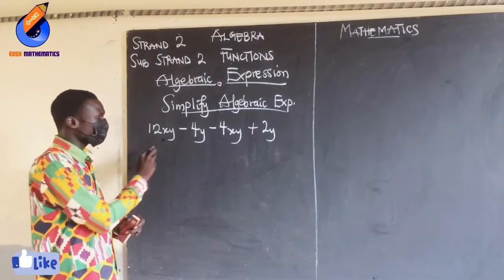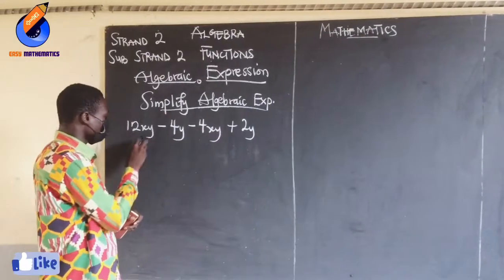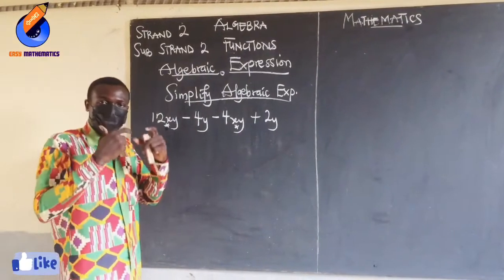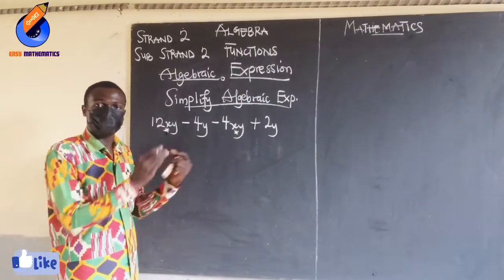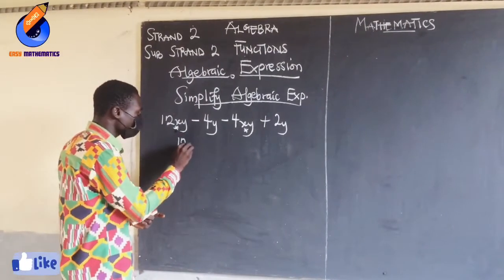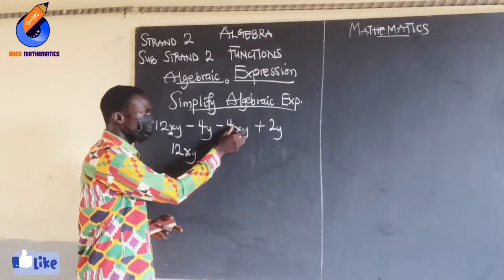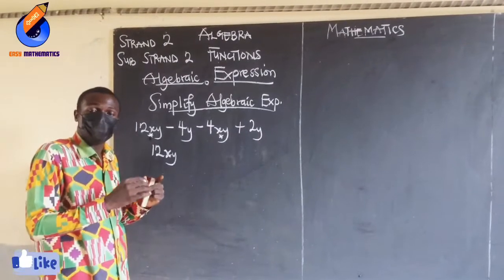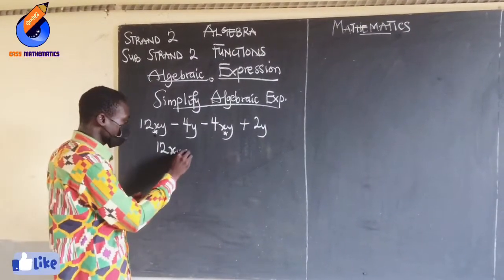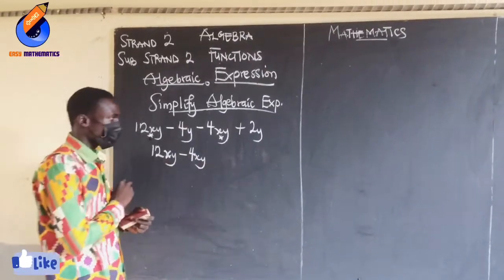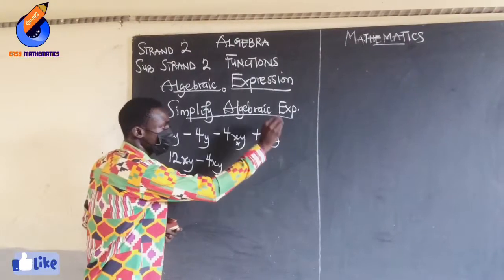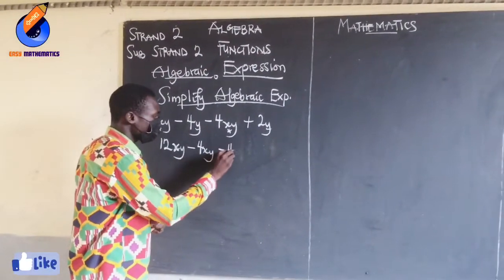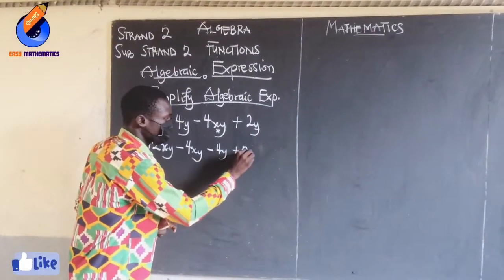When I look at the 12, it is having xy. When I look at the 4, it is having xy. So the 12 and the 4 are having the same variables. I will group them together: 12xy minus 4xy. Then the remaining terms — 4y and 2y — have the same variable y, making them like terms. So I will say negative 4y plus 2y.